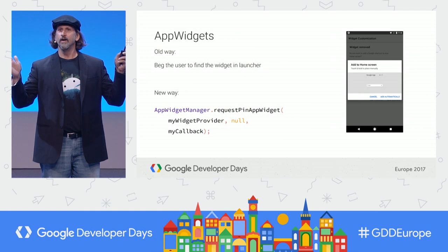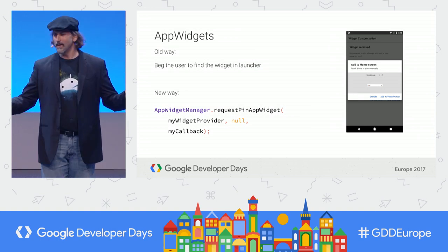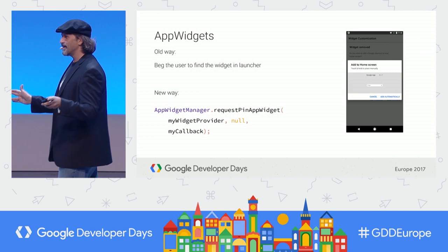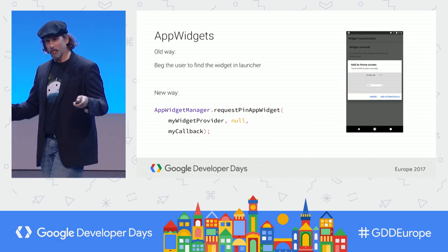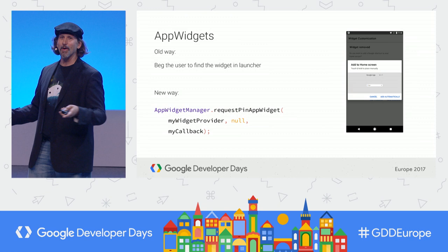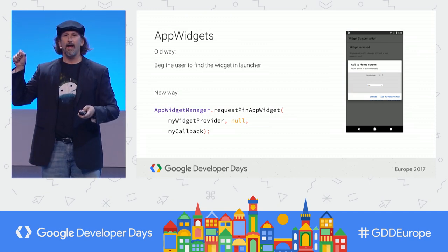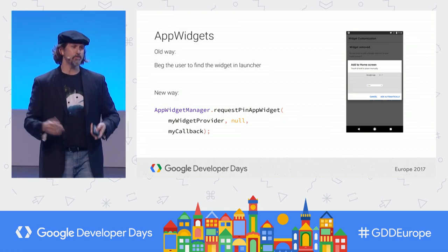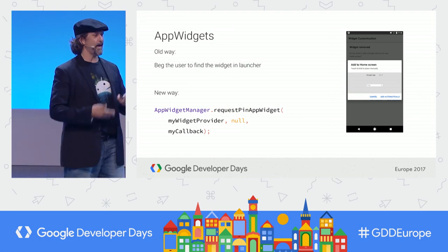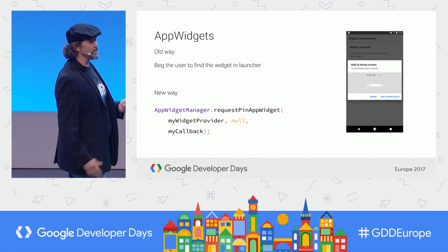We actually have a way for you to surface your app widgets in your app. You no longer have to beg the user to find it in the launcher. You can say you've got an app widget, please install it, they get prompted, and it gets added to the home screen.